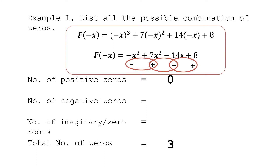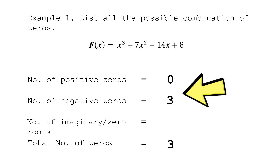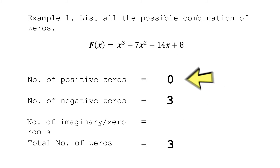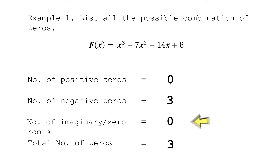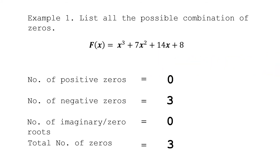Counting the variations in sign, we have 1, 2, 3 — meaning we have 3 negative zeros. Since the total number of zeros is 3, the combination of positive zeros, negative zeros, and imaginary zeros must equal 3. So with zero positive zeros and three negative zeros, we automatically have no imaginary or zero roots. This is just the first combination — let's identify the second combination.